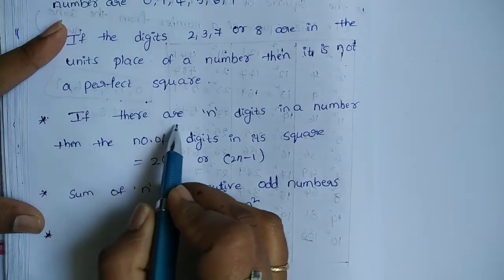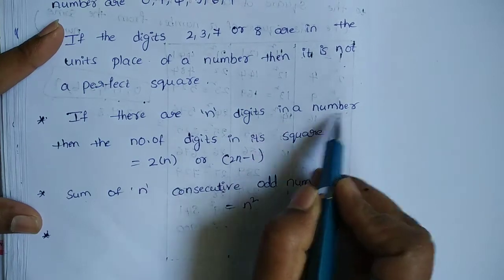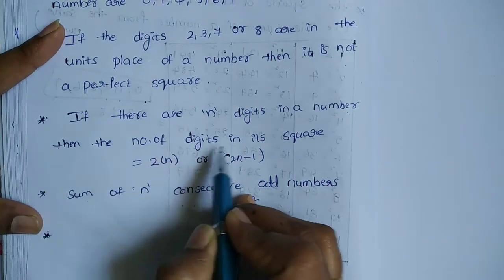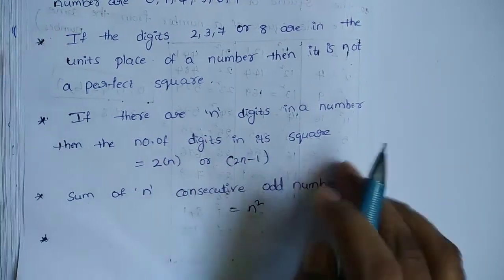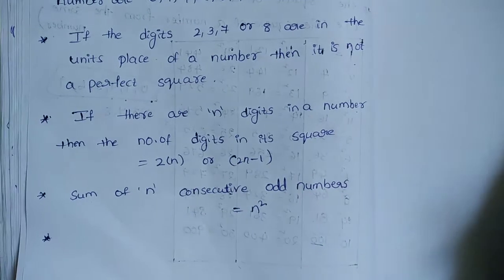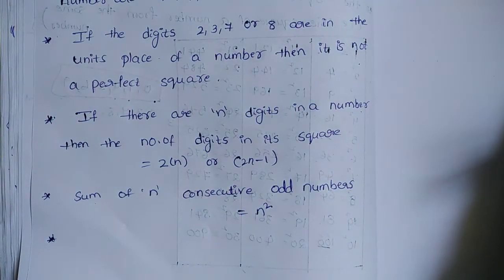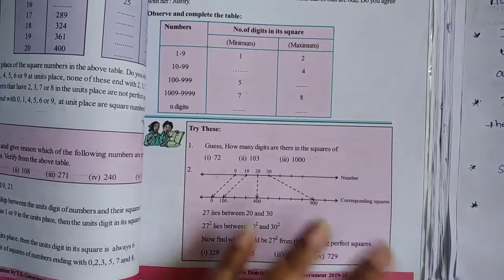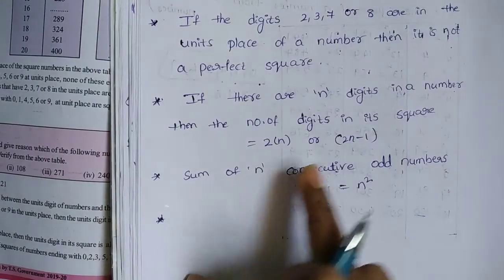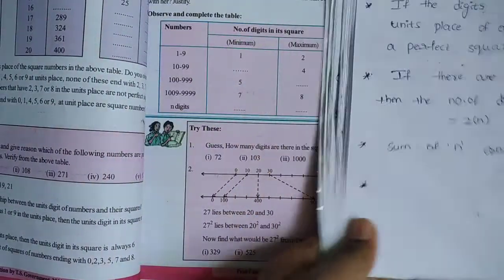If there are n digits in a number, then the number of digits in its square is either 2n or 2n minus 1.